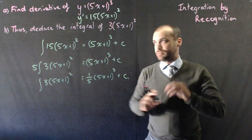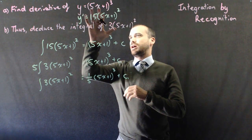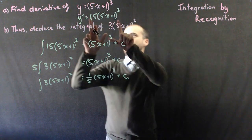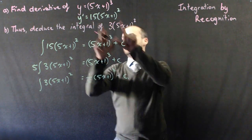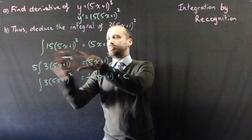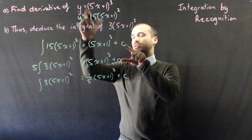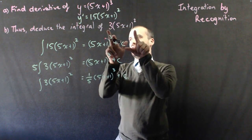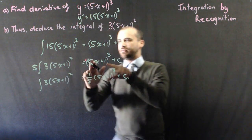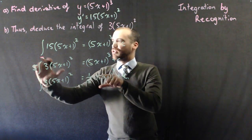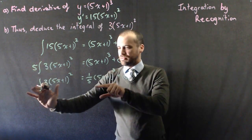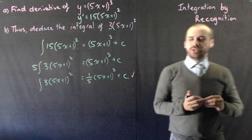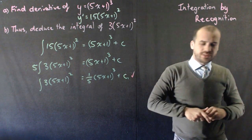Just to reiterate what I've done: I knew a derivative. That looked kind of like the thing I wanted to integrate, but not quite. The integral of the derivative expression will equal whatever the original function was. Then I asked: what do I have to do to that to make it look more like what I want? Factor out the 5, then divide by 5. And that gives me my answer.